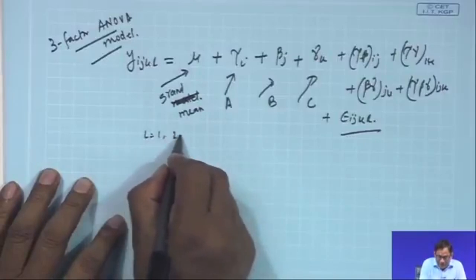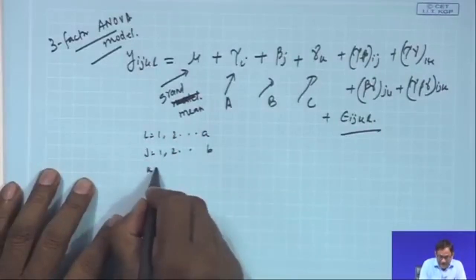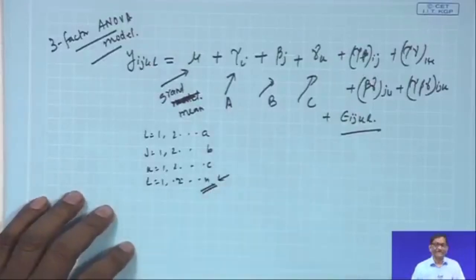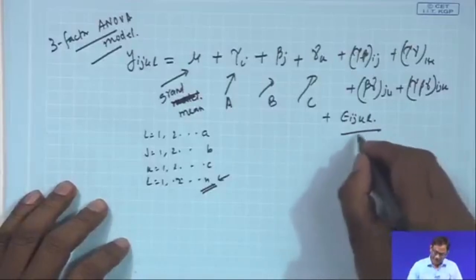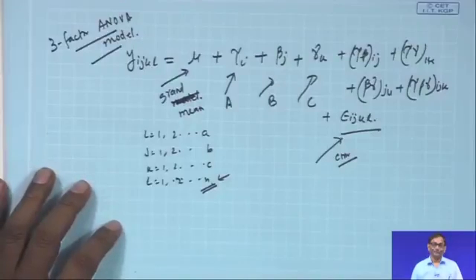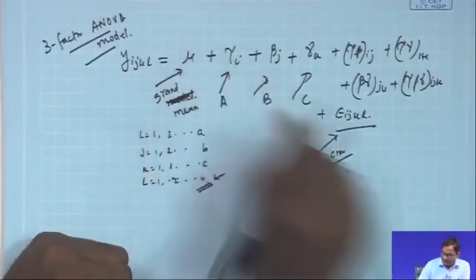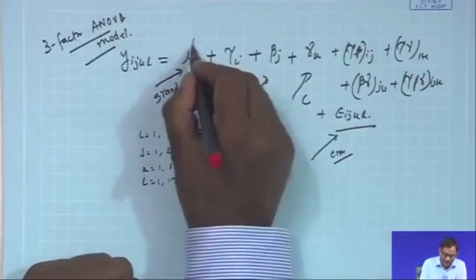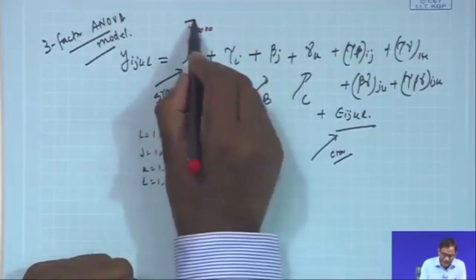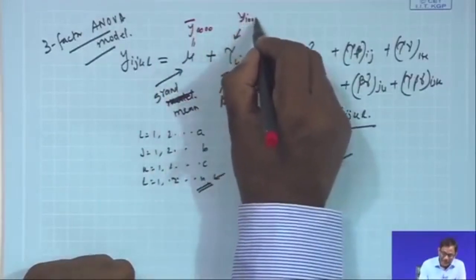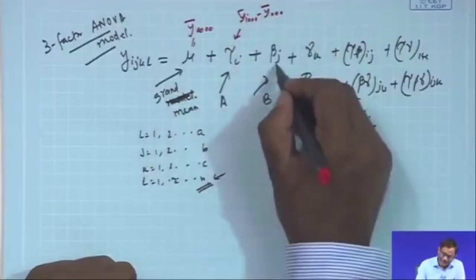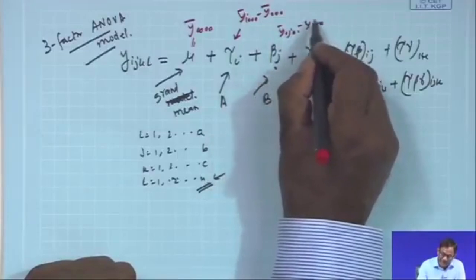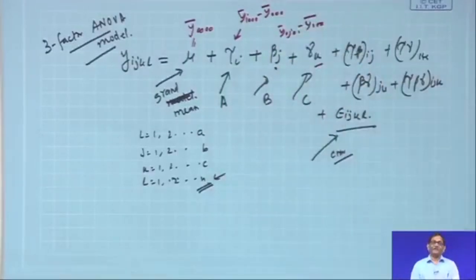In this model, i ranges from 1 to A, j from 1 to B, k from 1 to C, and L from 1 to N. We are considering balanced ANOVA where sample sizes are equal, and this is your error term. For estimation, the grand mean estimate is ȳ...., the estimate for factor A effect is ȳ_i... minus ȳ...., and similarly for other effects. Interaction effects are estimated in a similar manner to the two-factor ANOVA case.